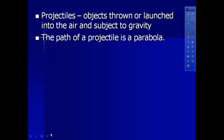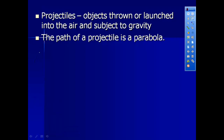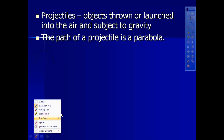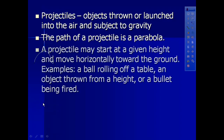The path of a projectile is a parabola. If you don't remember what a parabola looks like from math, it looks like an upside-down U. A projectile can start at a given height and move horizontally toward the ground, and I'm going to show you some examples of those in a few minutes - those are the ones we're going to talk about today.